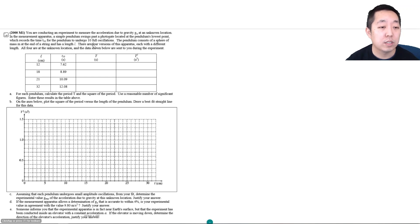So t10 is 10 full oscillations, which means the period is just one-tenth of this. So 7.62 divided by 10 is 0.762, and 8.89 divided by 10 is 0.889.